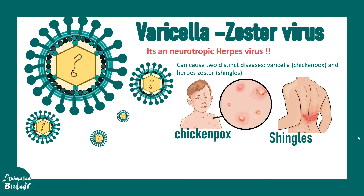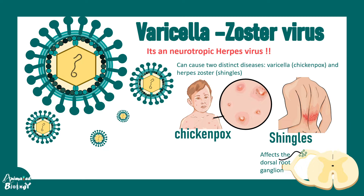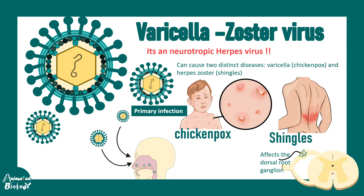This particular virus is a double-stranded DNA virus which is neurotropic in nature. It's actually a herpes virus, so it can affect the dorsal root ganglion and the peripheral nervous system — specifically the sensory fibers. The primary infection happens through the nasopharynx, so the upper respiratory tract gets infected first.